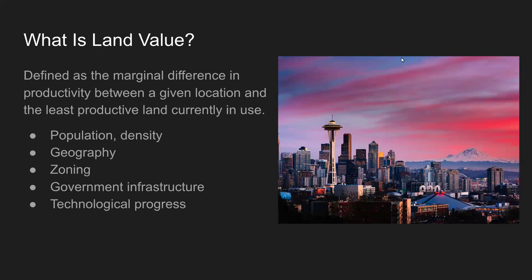One way we can do that is the land value tax. But first — what is land value, and where does it come from? In economics, we define land value, or land rent (they're interchangeable), as the marginal difference in productivity between the plot of land you're looking at and the least productive plot of land in existence. For example, if two equal-sized plots are next to each other, and one produces $100 in wealth per year while another produces only $20 — say it has terrible soil — the difference between the two is $80 in productivity.